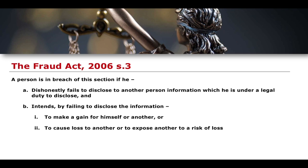The actus reus elements between sections 2 and 3 are different, but every other part of the offense is the same. Rather than dishonestly making a false representation with the intention to gain or to cause another loss or exposure to loss, in section 3 it is basically the same except instead of making a false representation you are failing to disclose to another person information which you are under a legal duty to disclose.